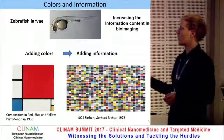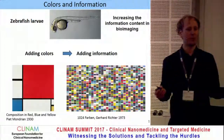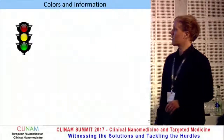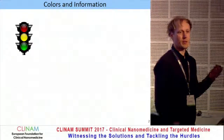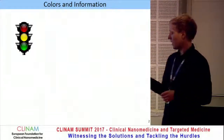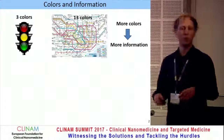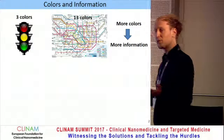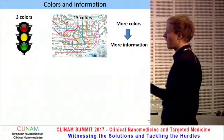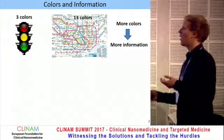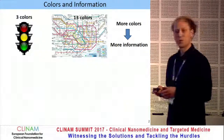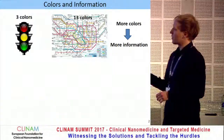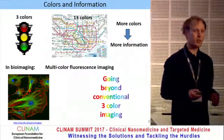A quite straightforward way to add information, at least for bioimaging, is to add colors. To do this efficiently, each color should have a specific meaning or significance, and in this way, if you add more colors, you can get more information into the image and visualize more complex relationships between the components of the system. One way this can be done is in multicolor fluorescence imaging.